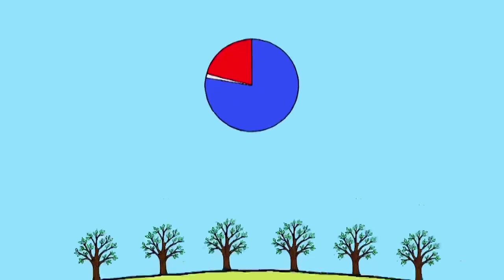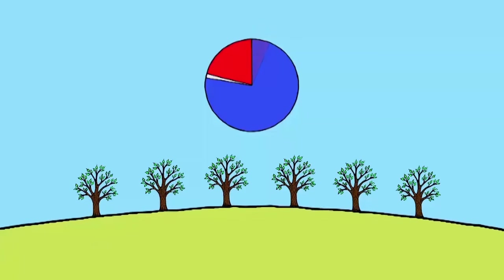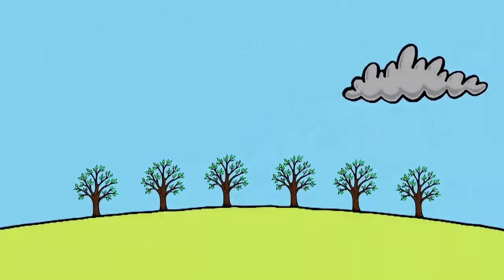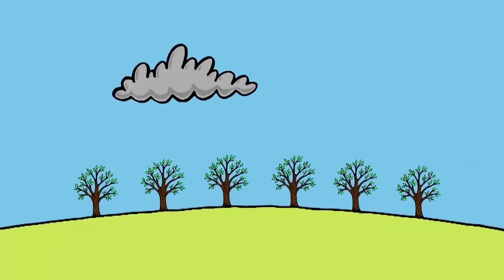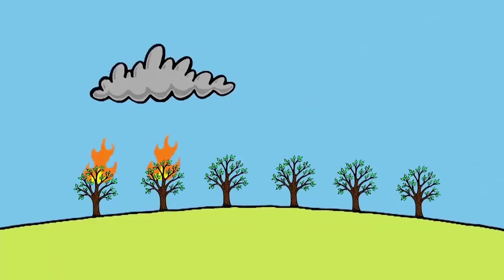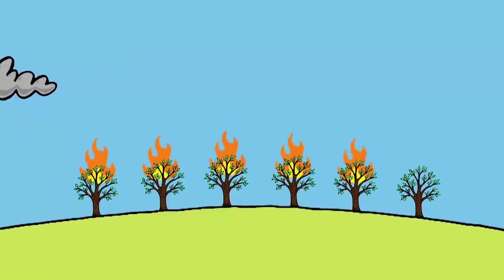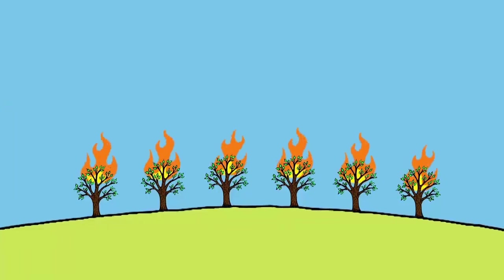If the Earth's atmosphere consisted of 30% oxygen rather than 21%, forest fires would start with lightning and would never go out. Life as we know it would be impossible.